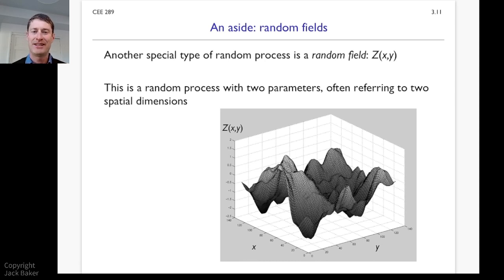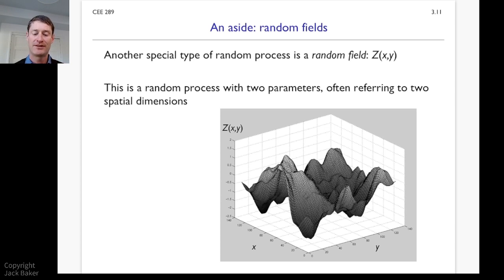In this video I want to take our introduction of stochastic processes a little bit further with a couple of extensions, and then start thinking about how we're going to characterize these processes. We introduced in the previous video scalar processes with scalar parameters, but we can do a couple other extensions to that.